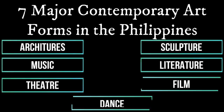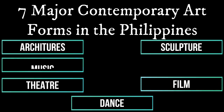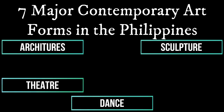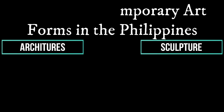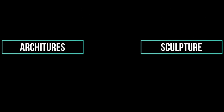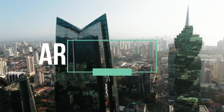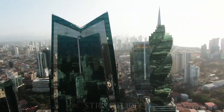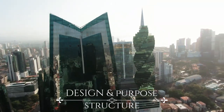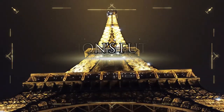There are seven major contemporary art forms in the Philippines. These are architecture, sculpture, music, literature, theater, film, and dance. As I've already talked about literature, music, film or cinema, and dance or choreography, I won't be talking much about their definitions, but I will be talking about architecture and sculptures, and the examples of the well-known contemporary arts that are found in the Philippines.